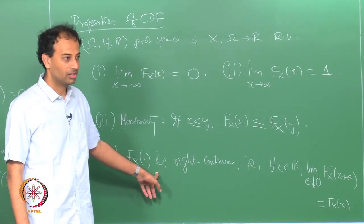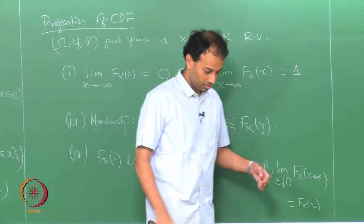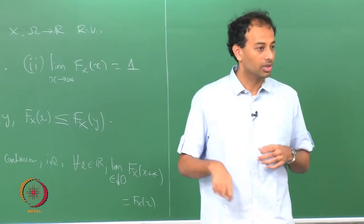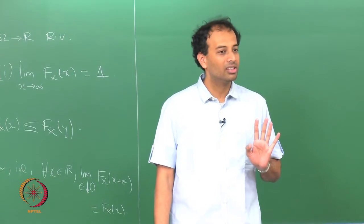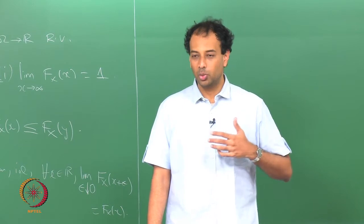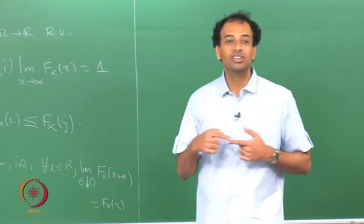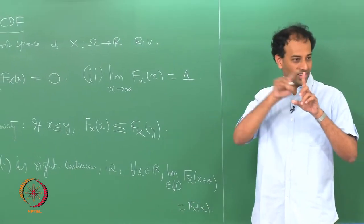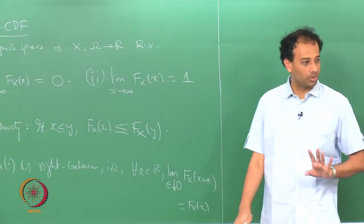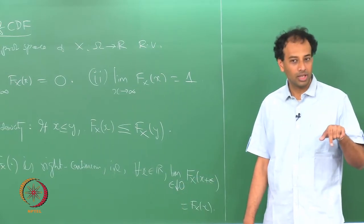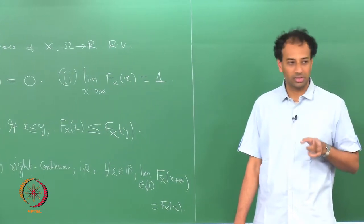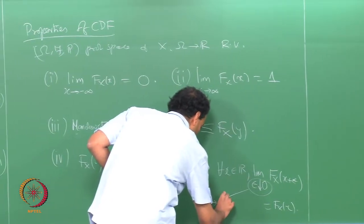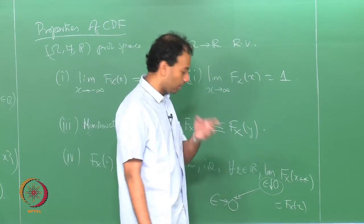Have you heard of right continuity? Well, if you have not heard of it, you just heard of it — this is what right continuity means. Continuity means there are no jumps. CDFs can jump; they do not have to be continuous functions of x. But what they cannot do is: if you approach from the right, the limit and the functional value have to be equal. The notation with epsilon down-arrow 0 means epsilon is going to 0 from the positive side — some people write epsilon going to 0-plus.